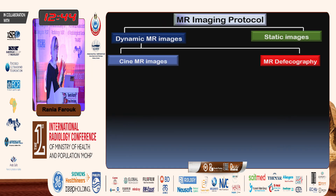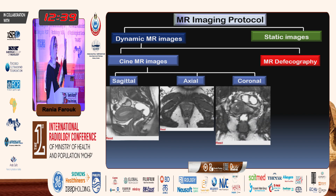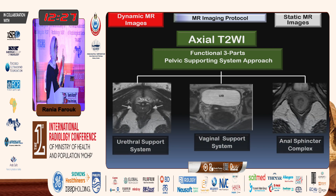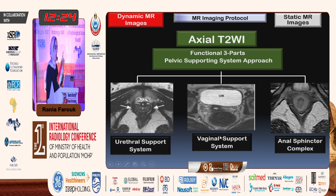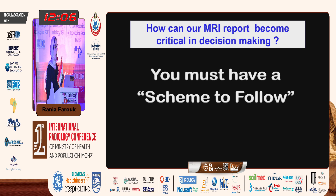Summarizing the session: you have the cine MR images in the static axial and coronal views. From these you determine whether the pelvic floor muscle is weak or intact. For the dynamic, you get the pelvic organ descent. For the axial, you evaluate the urethral, vaginal, and anal sphincter complex. If the patient complains of stress incontinence, thoroughly review the urethral support system. For the posterior compartment, go to the anal sphincter complex.